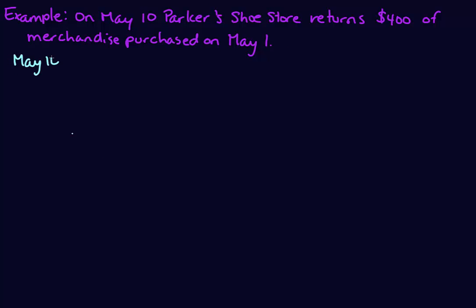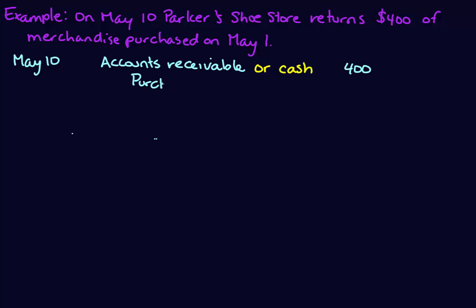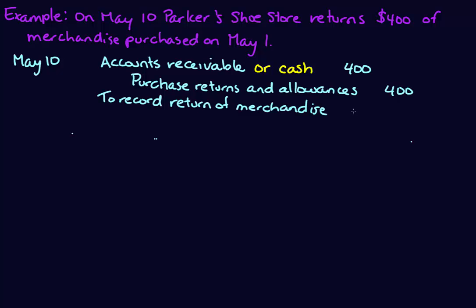This example has Parker's returning $400 worth of merchandise purchased on May 1st, on May 10th. We don't keep a running total of inventory, so we won't update the inventory account. Instead, we use an account called Purchase Returns and Allowances as our credit. The debit depends on how we paid: if we've already paid, we set up an Accounts Receivable or receive cash from the supplier; if we haven't paid yet, we debit Accounts Payable to reduce what we owe. In this case, since we've already paid, we set up an Accounts Receivable and expect a check for $400.